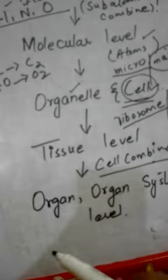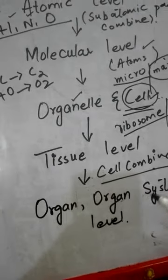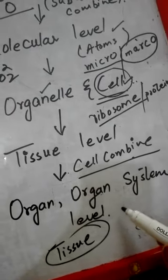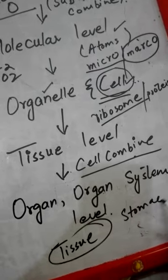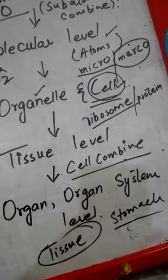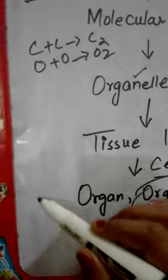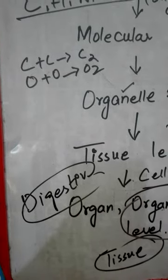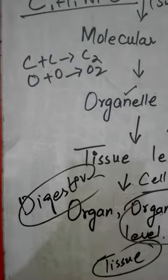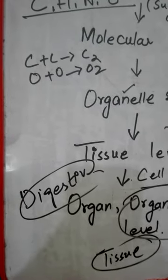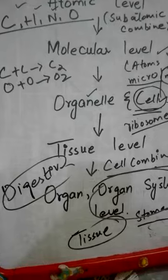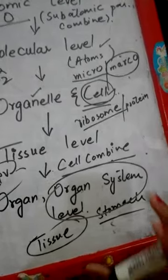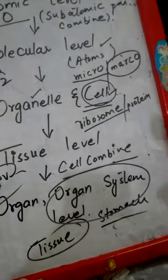And the last but not the least is organ and organ system level. Tissues combine to make an organ. Examples of organs are stomach. Stomach is an organ. And different kinds of organs combine to make a complete system. And the example of system is our digestive system. Our digestive system has so many organs which are interconnected and used to make the complete process work. That is your intestine, small intestine, large intestine, liver, your pancreas, your guts, etc. These are all interconnected in this way.